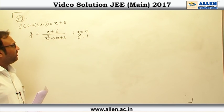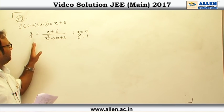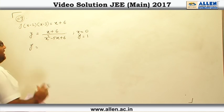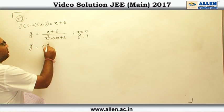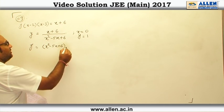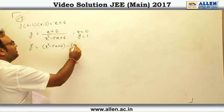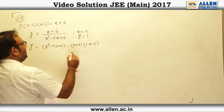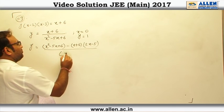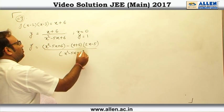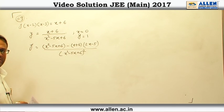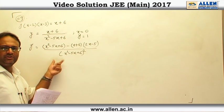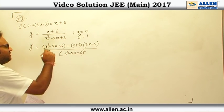So the point we have got — now to get the slope of the normal, first we will differentiate this particular graph with respect to x to get the slope. y dash is equal to x square minus 5x plus 6 minus x plus 6 into 2x minus 5, divided by x square minus 5x plus 6 whole square. Now if we put x equal to 0 into this derivative, we are going to get the slope of the tangent at x equal to 0.